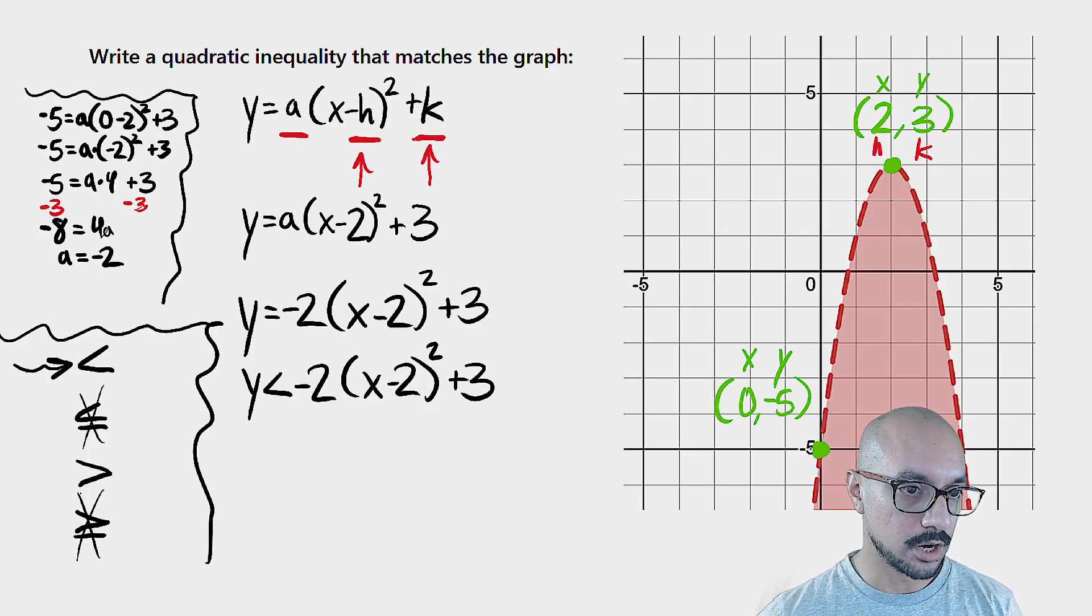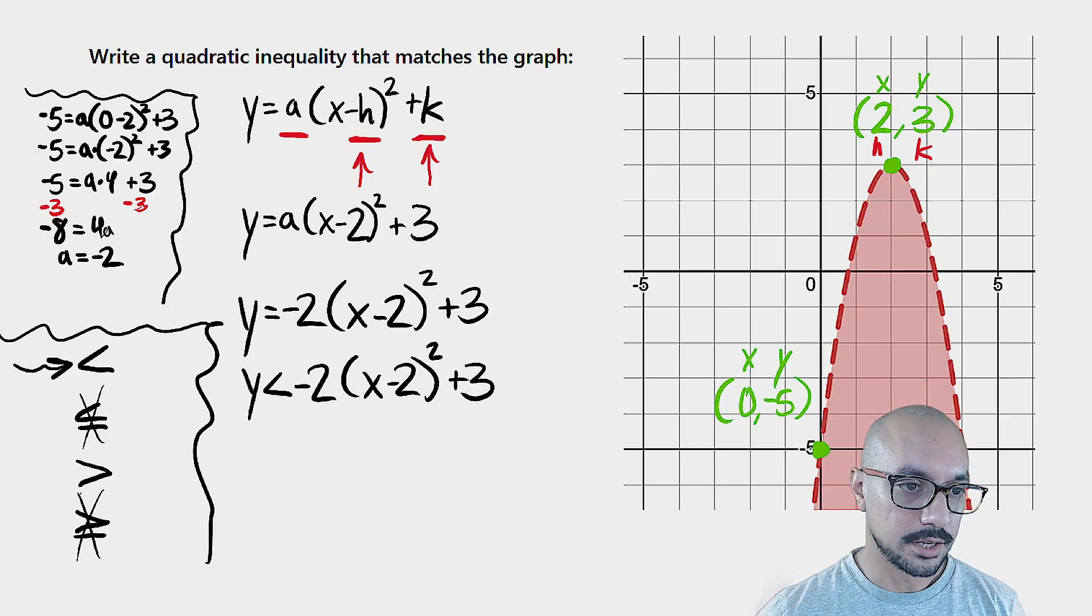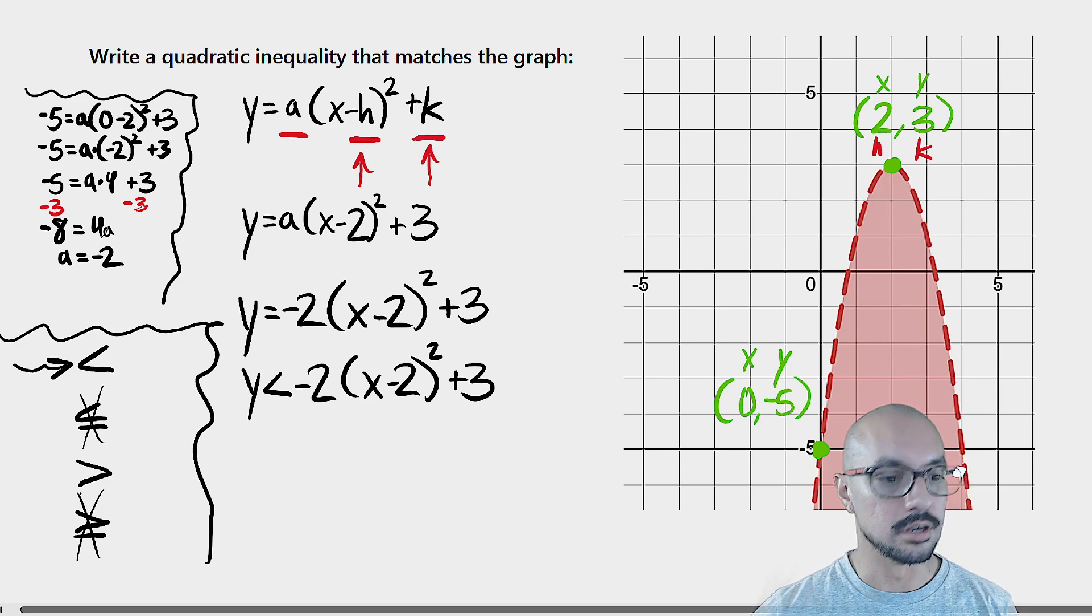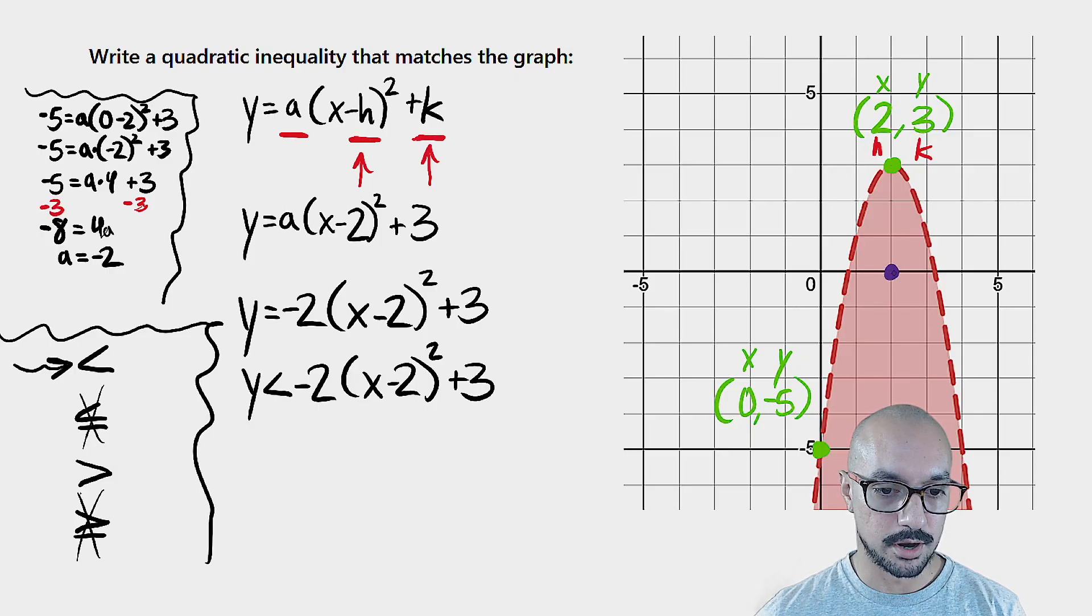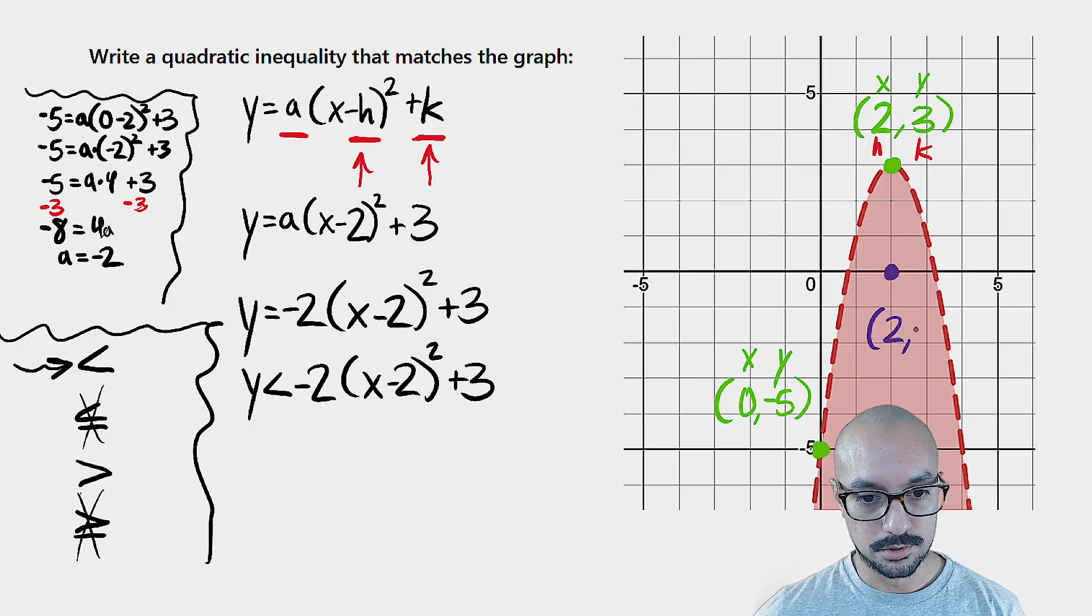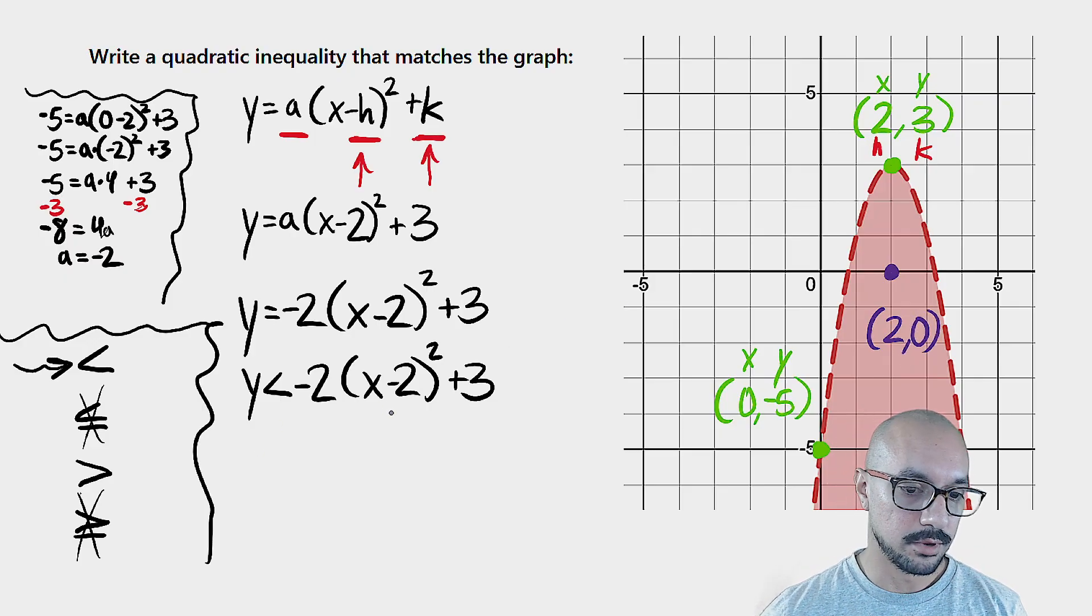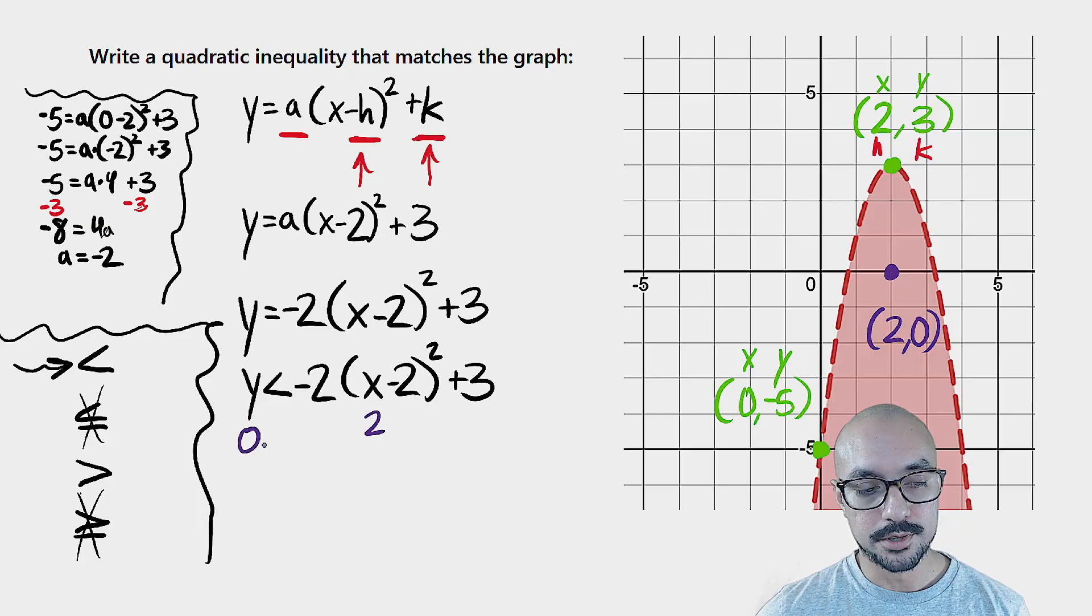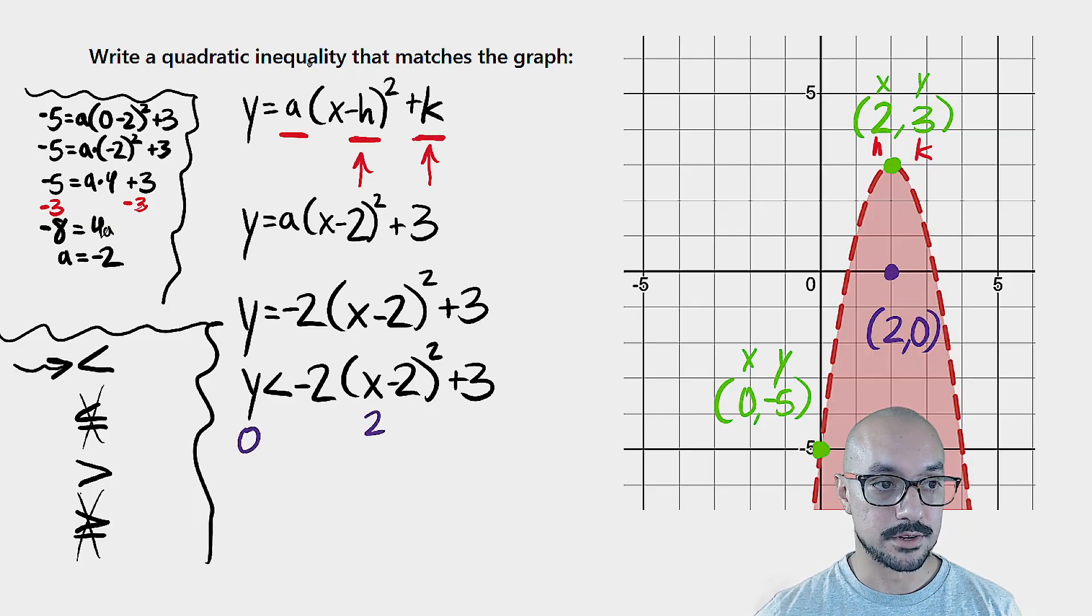But if I want to be super, super certain, what I can do is just make sure that my shading makes sense with the quadratic inequality that I have. So I'm going to pick a test point in the shaded part. The ordered pair for this test point is two, zero. And what I'm going to do is I'm going to plug that in for x and y. And if I end up with a true statement, that means I've done everything correctly.